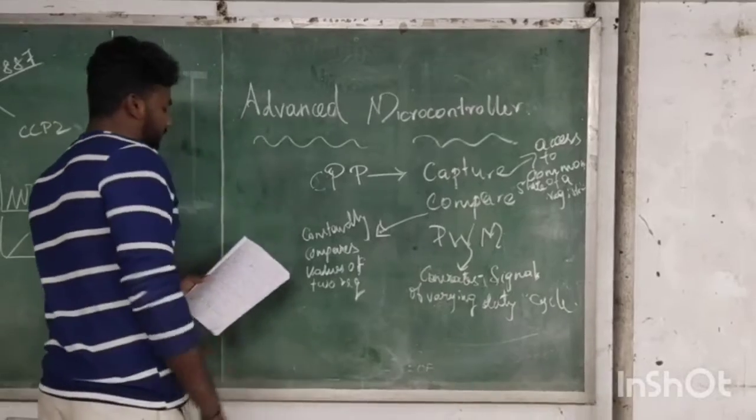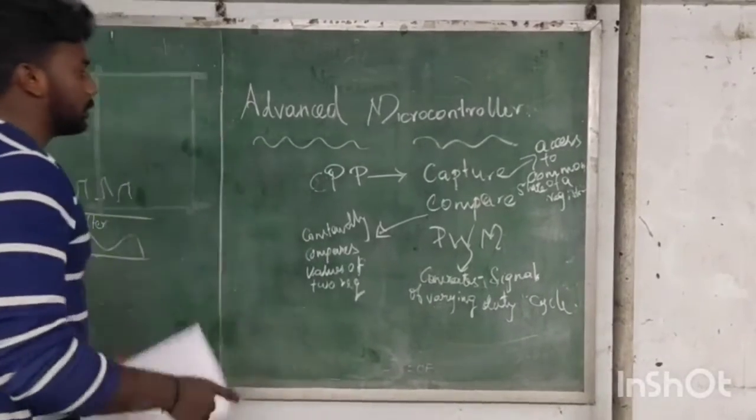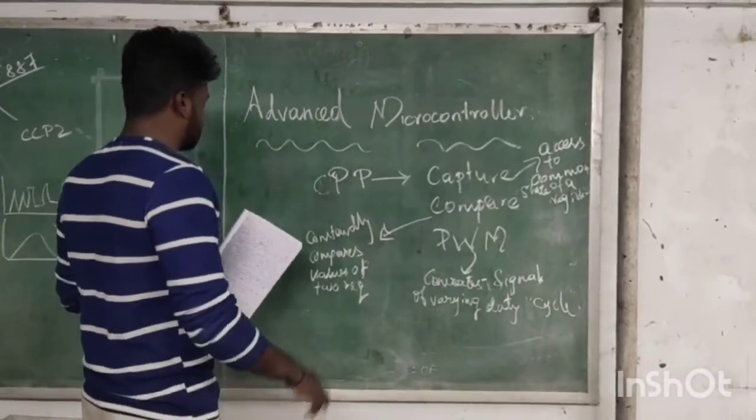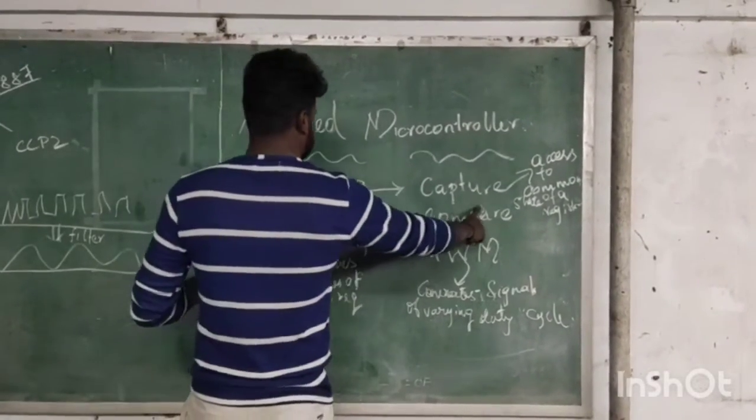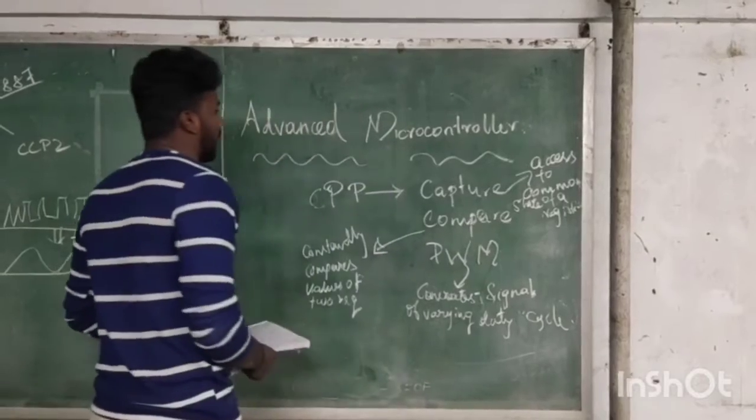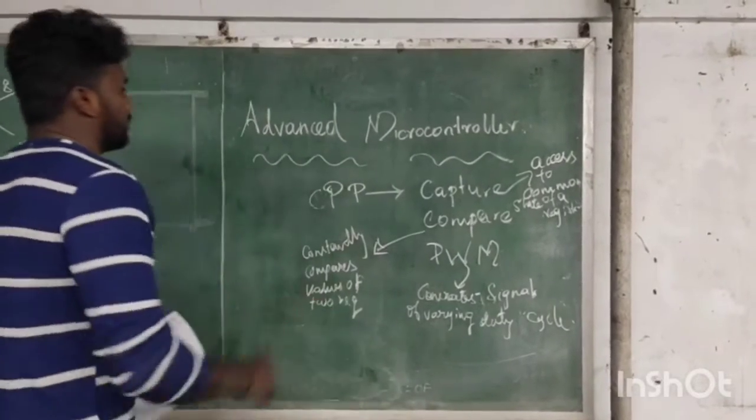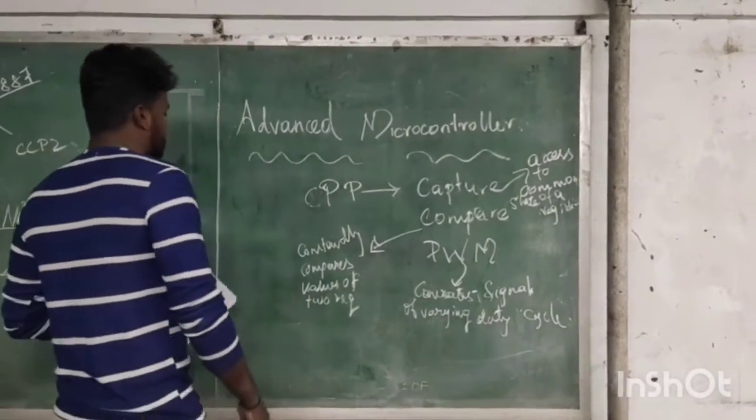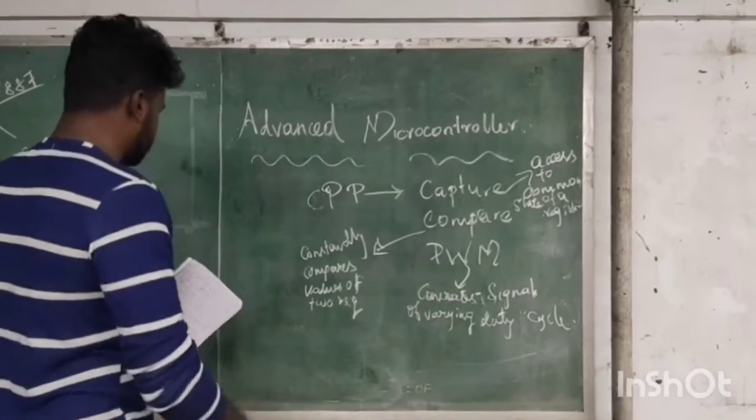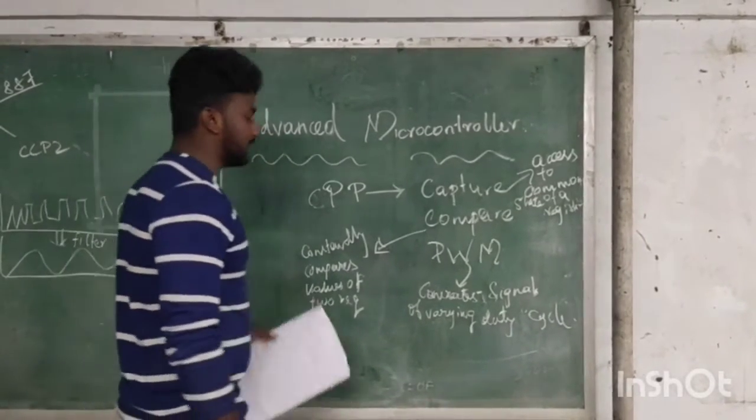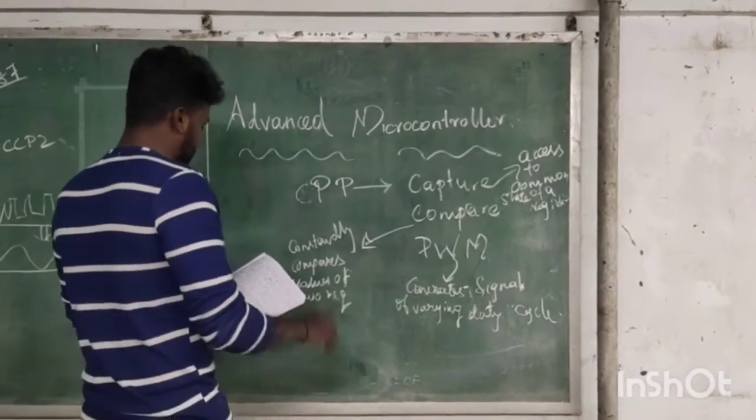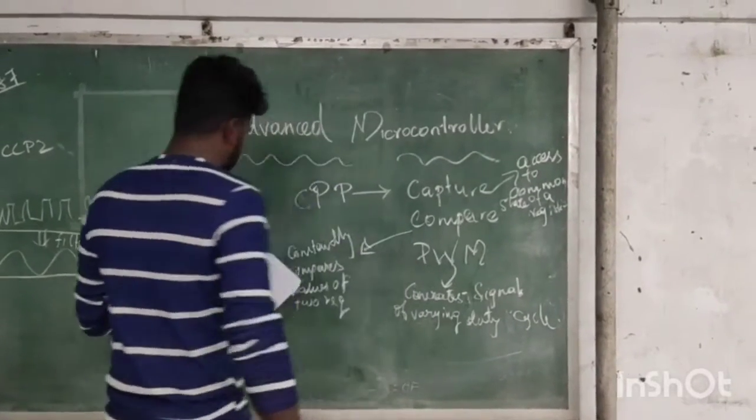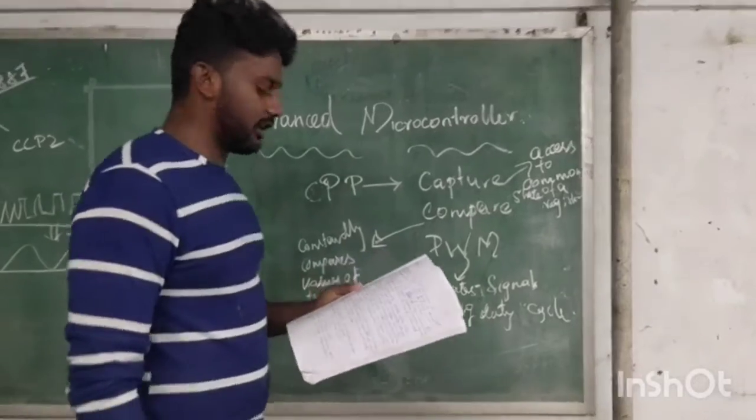It is a peripheral which allows the user to time and control different events. Capture mode provides access to common state of a register, and compare mode constantly compares the value of two registers. One of them is TMR1 register. This allows the user to trigger an external event when the predetermined amount of time has expired.